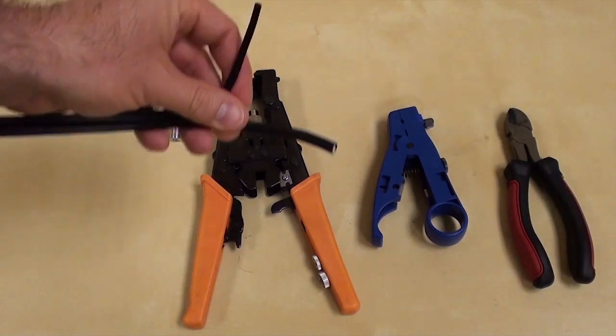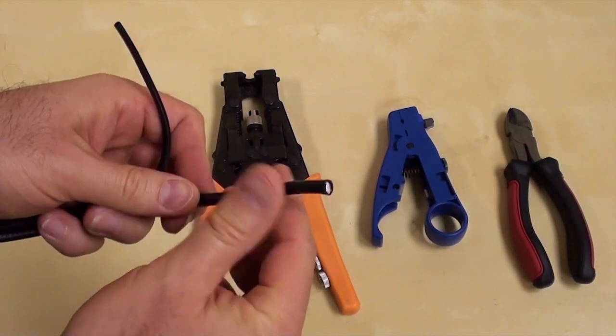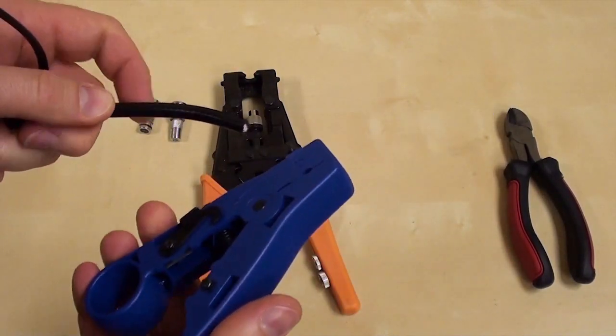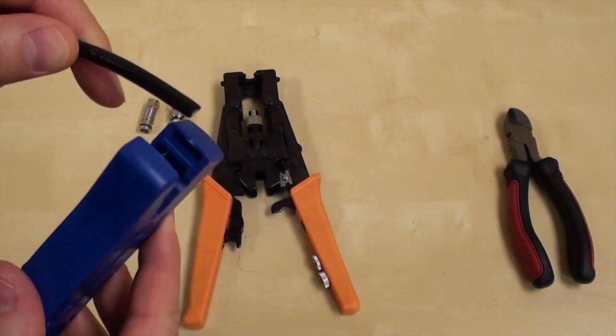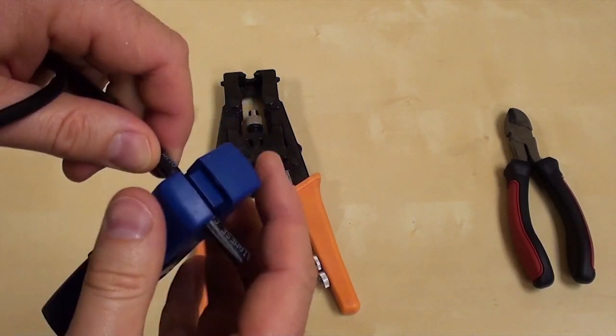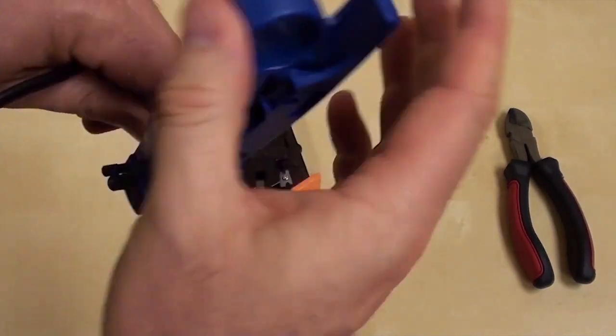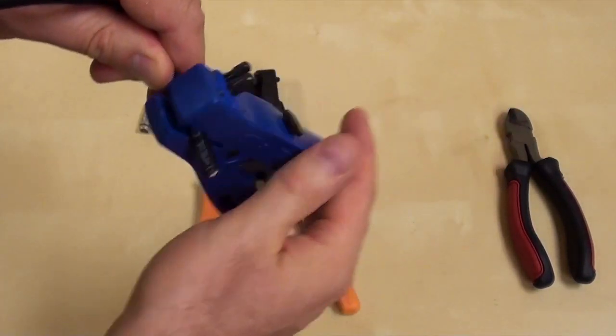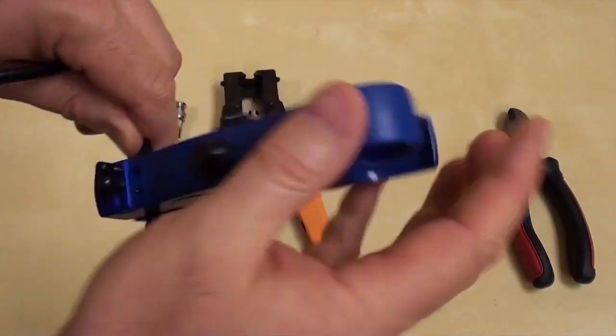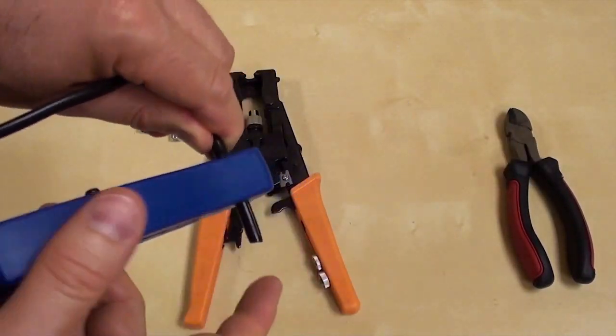First step is to use our cable stripper to strip the coax cable properly. Place the RG-59 in the TL-22 cable stripper so that around an inch is sticking out beyond the tool. Then, rotate the cable stripper around the cable five to ten times until you no longer hear the tool cutting.